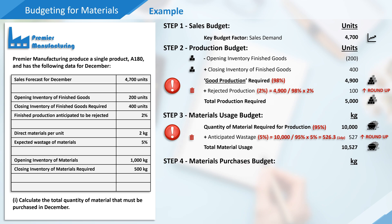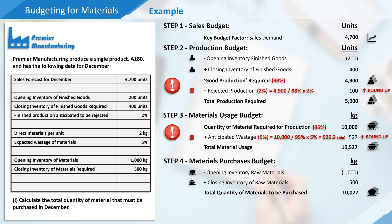The final step when budgeting for materials is the materials purchases budget. We're told that we have some materials already in inventory — in fact 1,000kg. So if we already have these available we won't need to purchase them, and we can deduct this from our total material usage. We're also told that we need to plan for a closing inventory figure of 500kg of material, which we will need to purchase in addition to the amount that will be used in production, so we need to add this amount on. Accounting for opening and closing inventory, the total quantity of materials we need to purchase is 10,027kg.